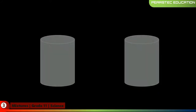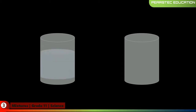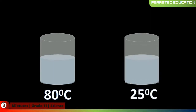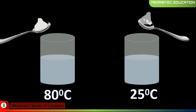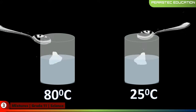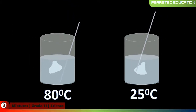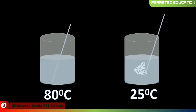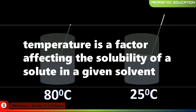Let's do an experiment that you already know. In the first experiment, we are taking two small beakers — one with water at 80 degrees Celsius on the left side, and one at 25 degrees Celsius on the right side. We are taking two equal amounts of sugar and trying to dissolve them. As you saw, 80 degrees Celsius was faster to dissolve. That shows temperature is a factor affecting the solubility of a solute in a given solvent.